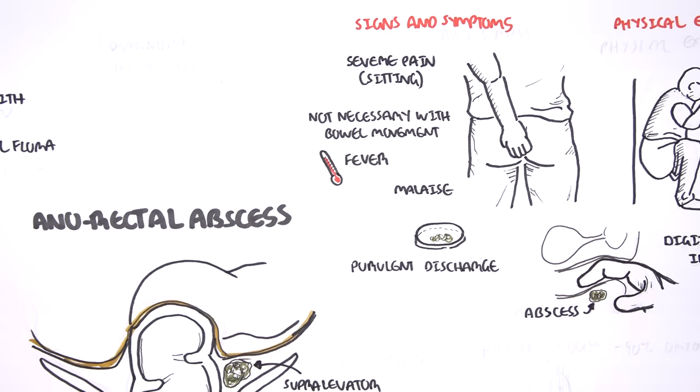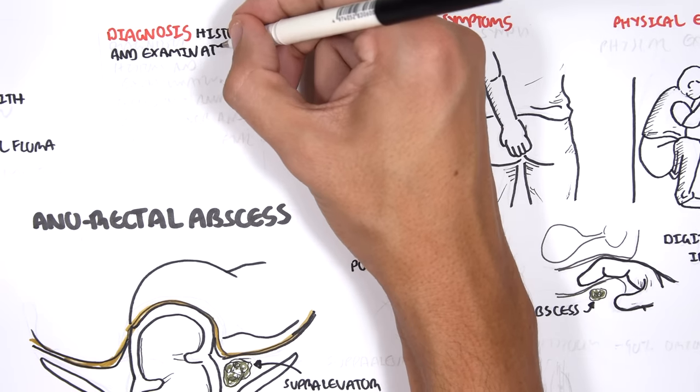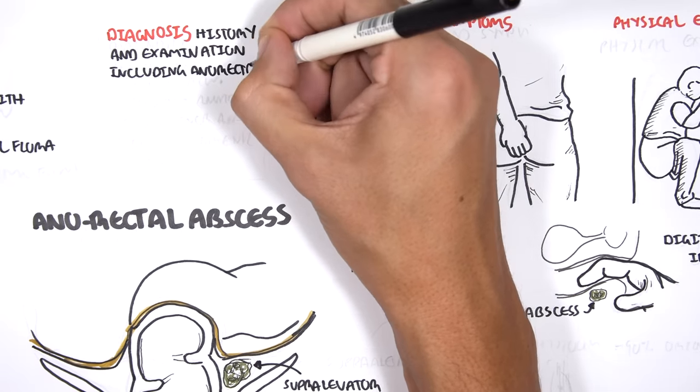Diagnosis of abscess is generally straightforward. It's history, the examination, including anorectal pain, fever, and a palpable anorectal mass.